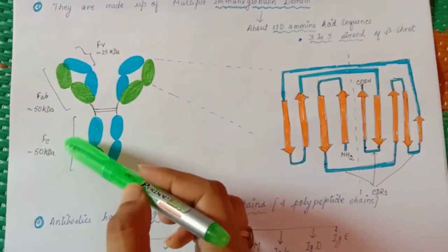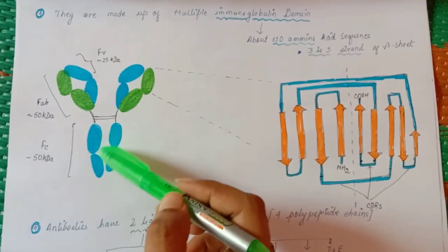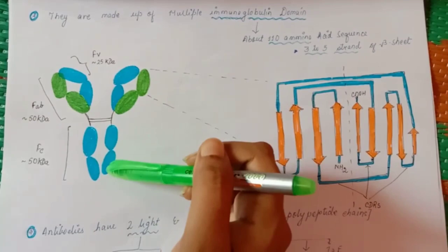FC is fragment of crystallization. This is about 50 kilodalton. Now this constant region is always constant, same in all, but this variable region varies.